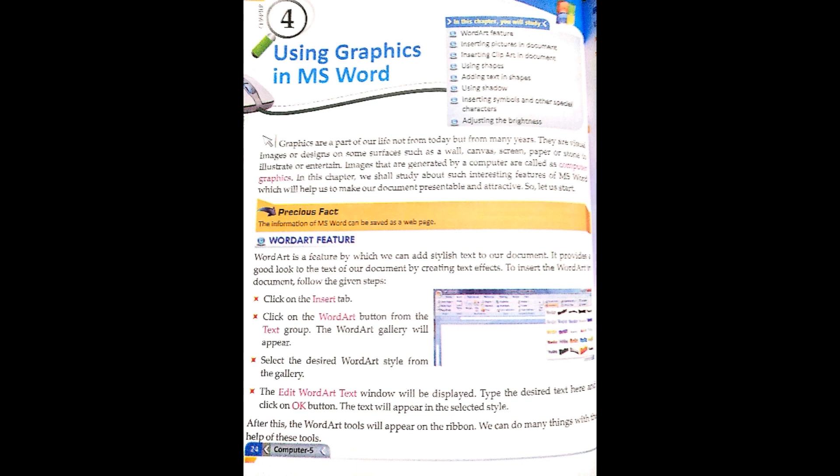Images that are generated by a computer are called computer graphics. All the images generated by a computer are called computer graphics. In this chapter, we will study this. This is a very interesting feature which will help us to make a document presentable and attractive.